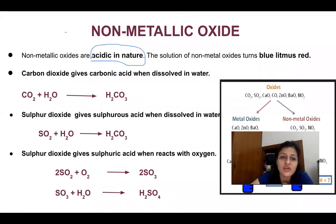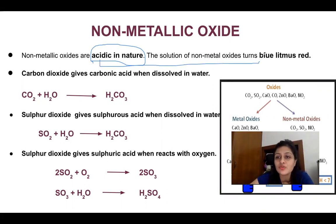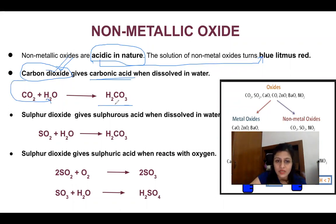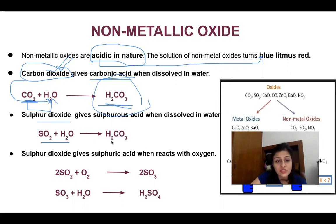Now let's talk about non-metallic oxides. Non-metallic oxides are basically acidic in nature — whereas metallic oxides are basic in nature, non-metallic oxides are acidic. Acidic in nature means they turn blue litmus to red. For example, carbon dioxide is a non-metallic oxide. When it reacts with water, it becomes carbonic acid. Sulfur dioxide, when it reacts with water, becomes sulfurous acid.